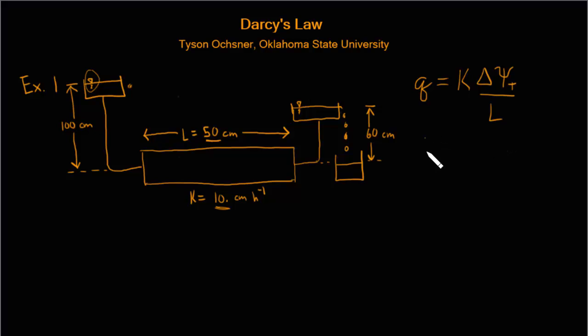So our first step in solving this problem is to find that difference in the total water potential across the column. Find delta psi t. And then the second step in the problem is to calculate the flux Q.